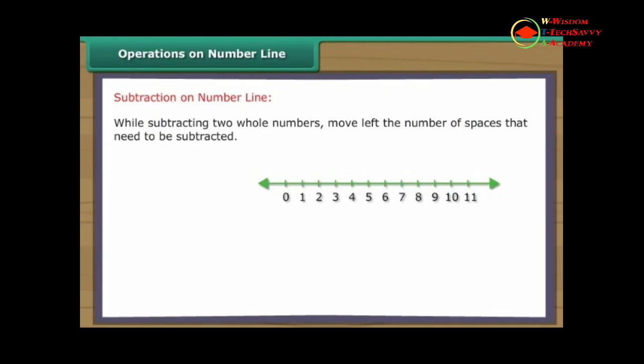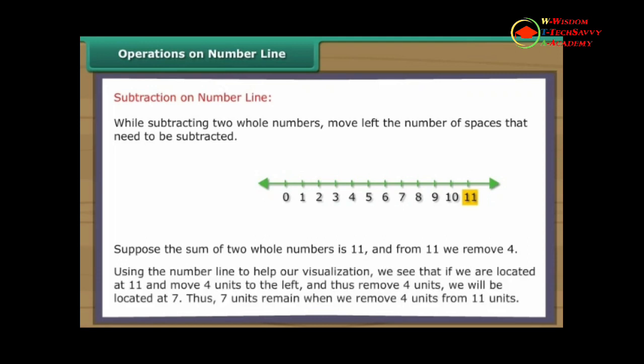While subtracting two whole numbers, move left the number of spaces that need to be subtracted. Suppose the sum of two whole numbers is eleven and from eleven we remove four. Using the number line to help our visualization, we see that if we are located at eleven and move four units to the left and thus remove four units, we will be located at seven. Thus, seven units remain when we remove four units from eleven units.